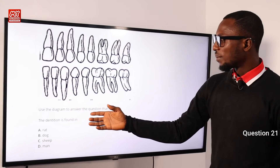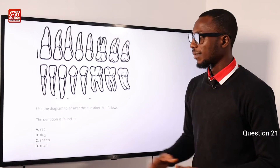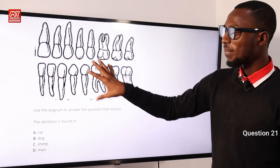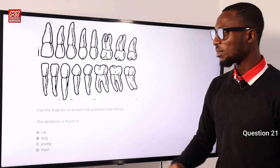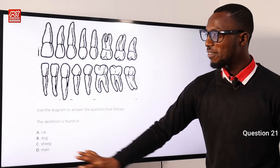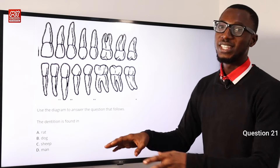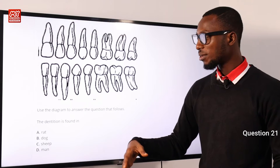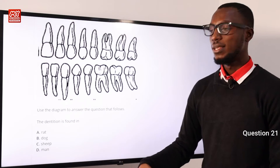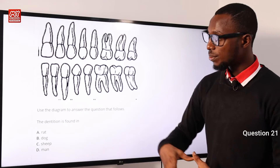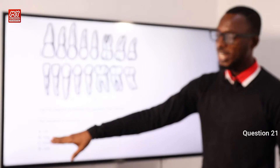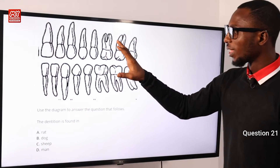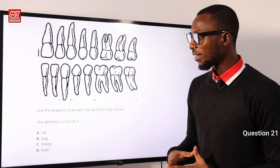Use the diagram to answer the question that follows: the dentition is found in what? So this is a diagram of a particular kind of dentition. Looking through all the options, you realize these are all mammals. Some may be omnivores, like man and rats. One option is a carnivore — that's a dog — and sheep is an herbivore.